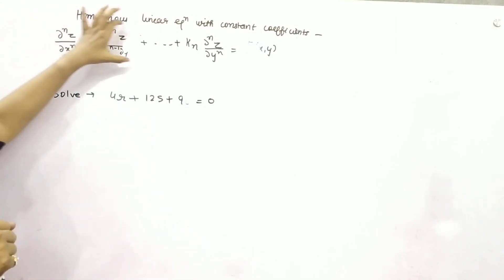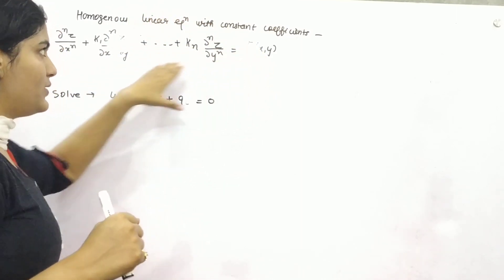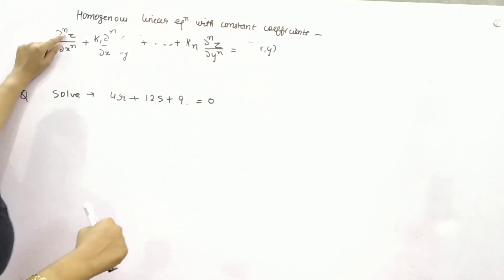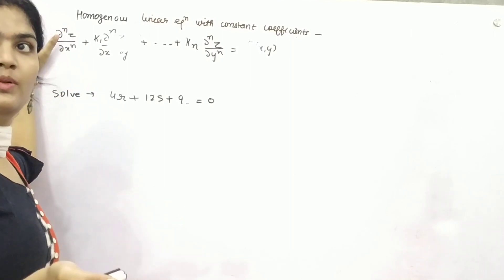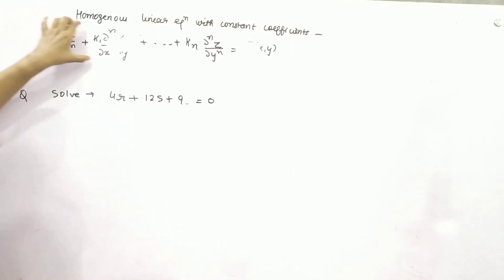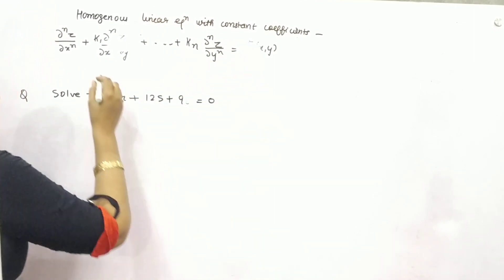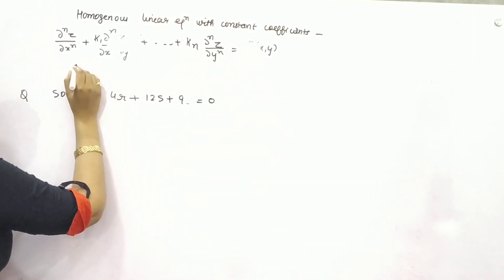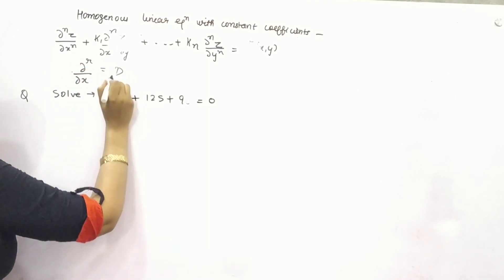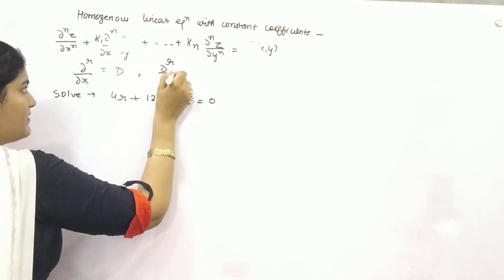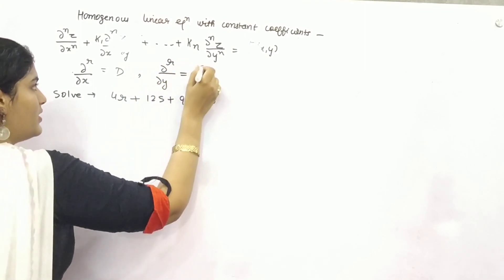Let's say you are given an equation of order n. It may be double or triple partial differentiation. You need to consider if you are differentiating with respect to x, this will be your d. And if you are differentiating with respect to y, this will be your d dash.